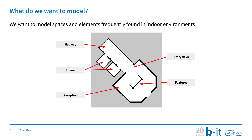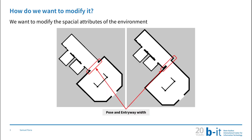So what are we interested in modeling? We want to model the spaces and elements that are frequently found in indoor environments. We are interested in modeling hallways, rooms, and special-use spaces such as receptions, as well as elements that are found within them — entryways, columns, and dividers. If we want to create variations of these environments, we might be interested in modifying the spatial attributes of the environment, such as the width of an entryway or the pose of a corridor.